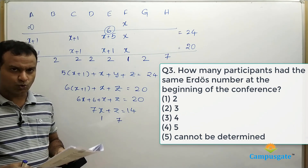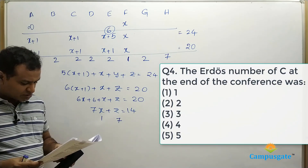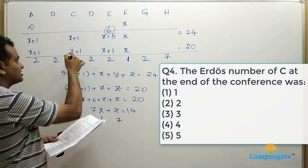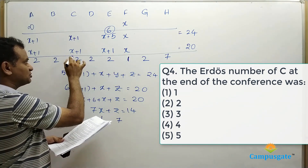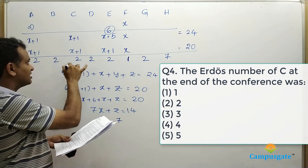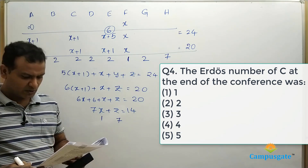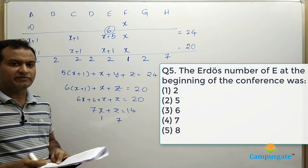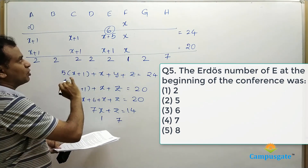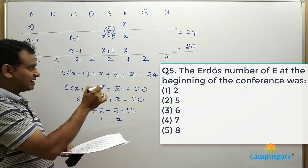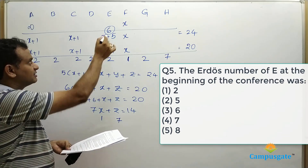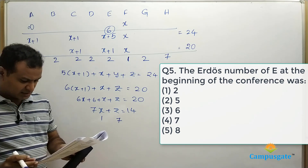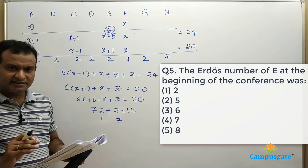The Erdős number of C at the end of the conference: C co-authored a paper with F, so his number changed to X plus 1. Since X equals 1, C's Erdős number is 2. The Erdős number of E at the beginning of the conference: E's value was X plus 5. Substituting X equals 1, his value is 6. So E's Erdős number at the beginning of the conference was 6 — answer option 3.